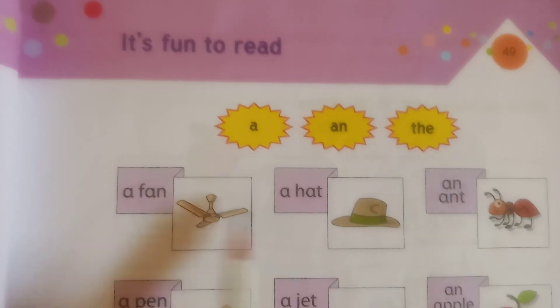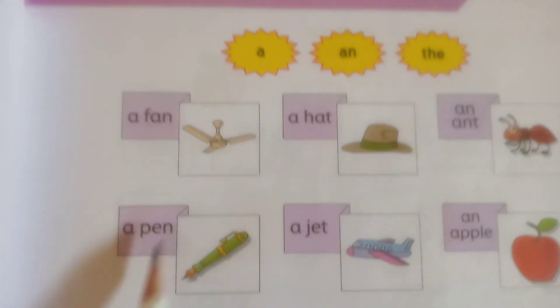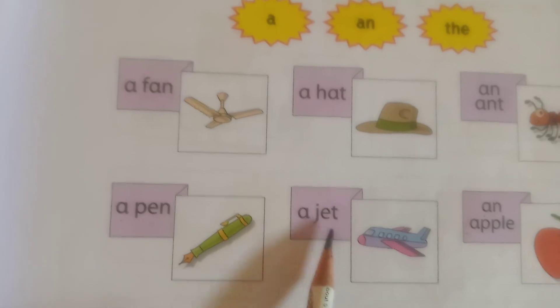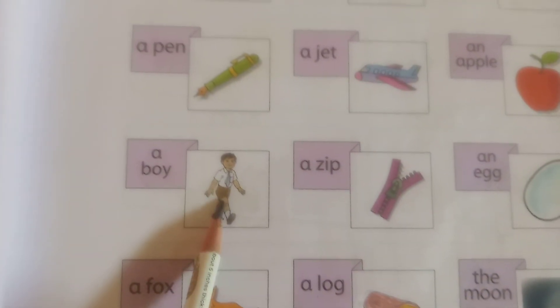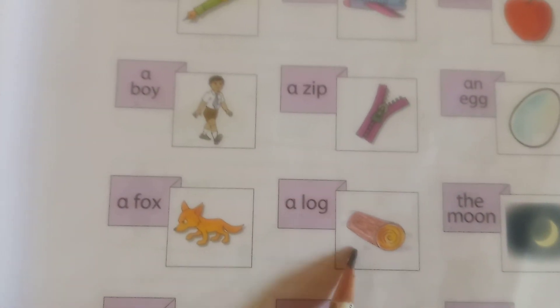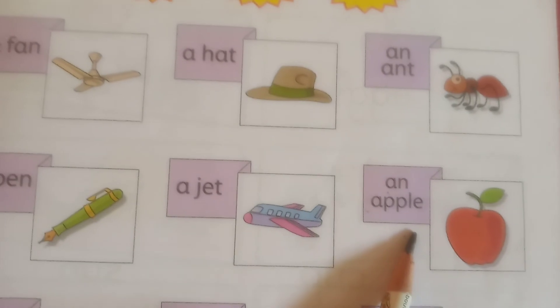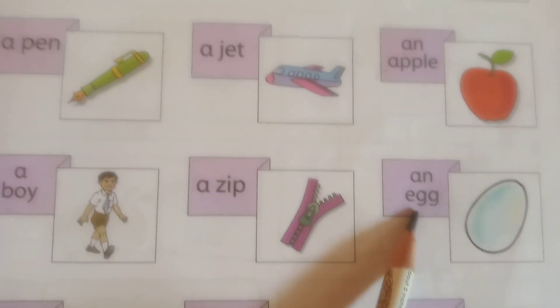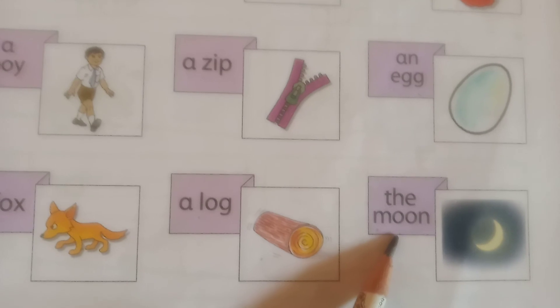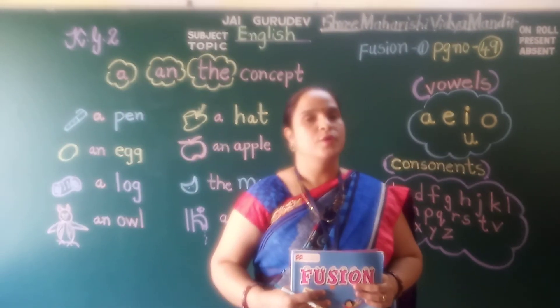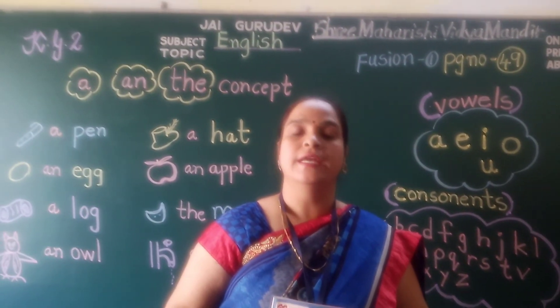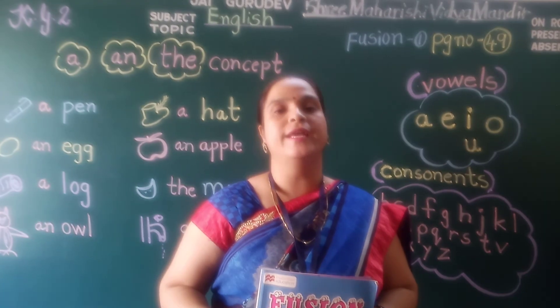Let us read once again. A fan. A hat. A pen. A jet. A boy. A zip. A fox. A log. A cup. A tap. An ant. An apple. An egg. The moon. The sun. So students, go through my video carefully and try to learn the A, an, and the concept. Good day. Bye-bye.